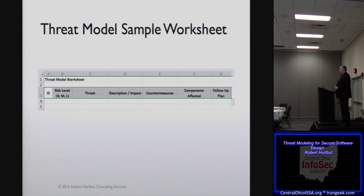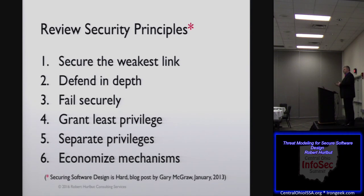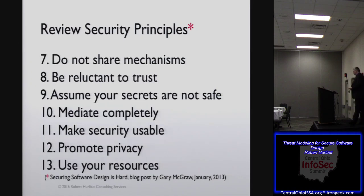To start off with your team, one of the first things you want to do is review your security principles. This is important to make sure everybody's on the same page and understands — we're talking about a secure system. How are you going to be secure unless you know what it means to be secure? What are the baselines? What are the actual things that need to be in place? Secure weakest link, defend in depth, do not share mechanisms, assume secrets not safe, promote privacy, use resources.